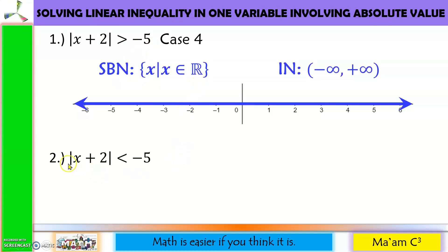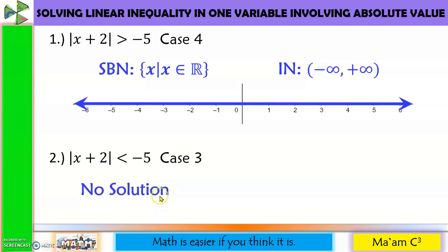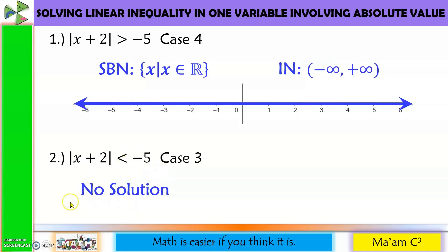Next one. Here we have the absolute value less than negative 5 — this is Case 3, so there is no solution. Let us verify by trying 0: the absolute value of 0 plus 2 is 2, and 2 is not less than a negative number. So we have no solution.